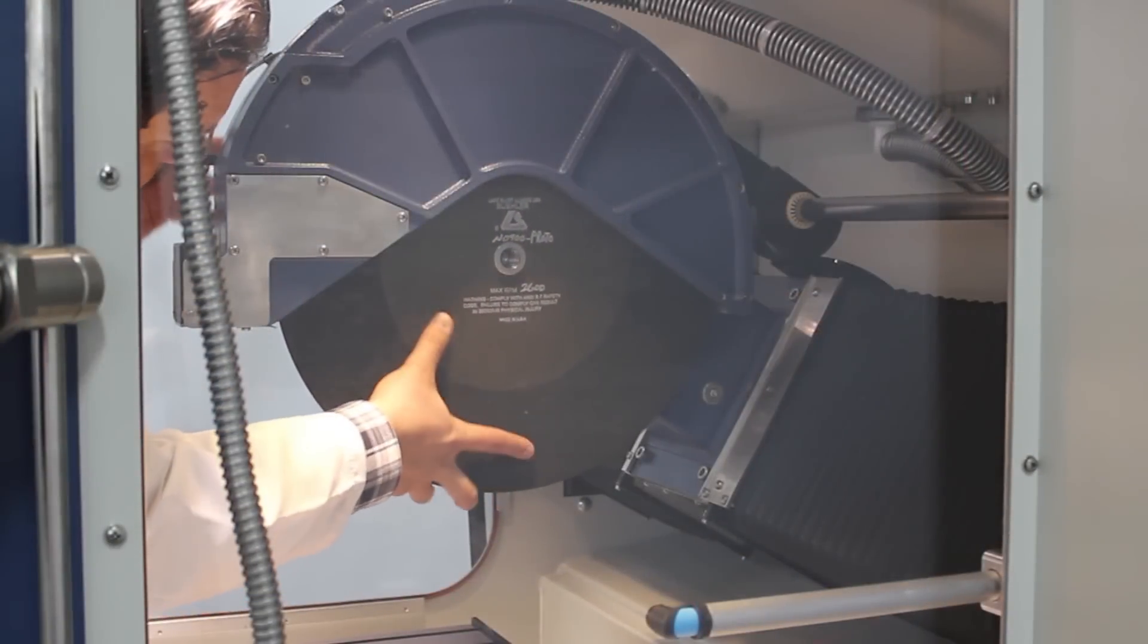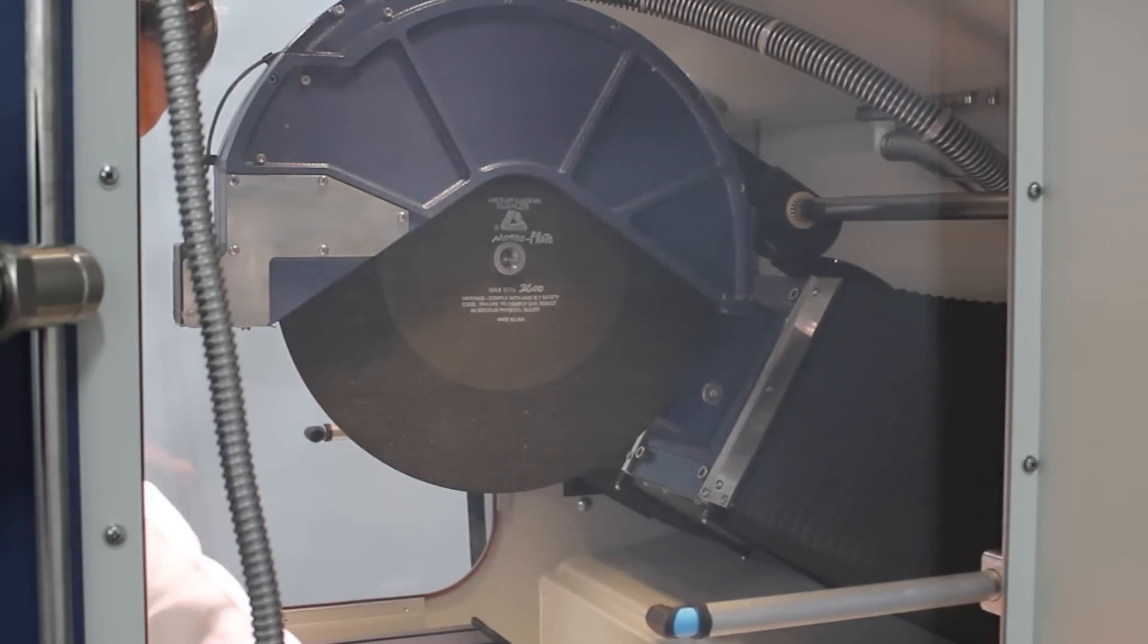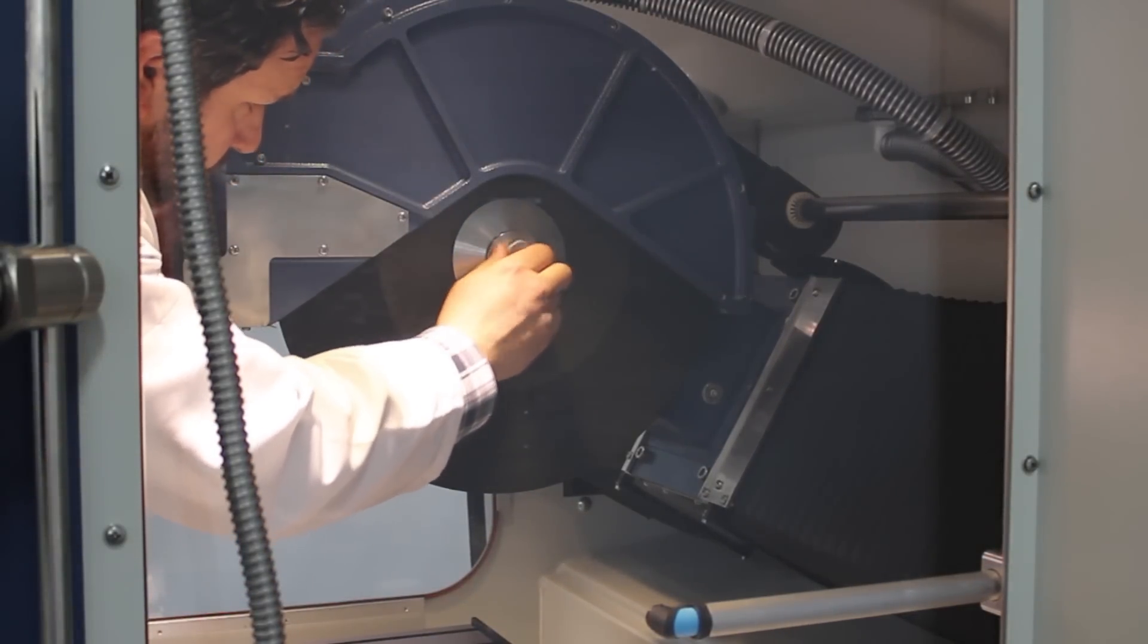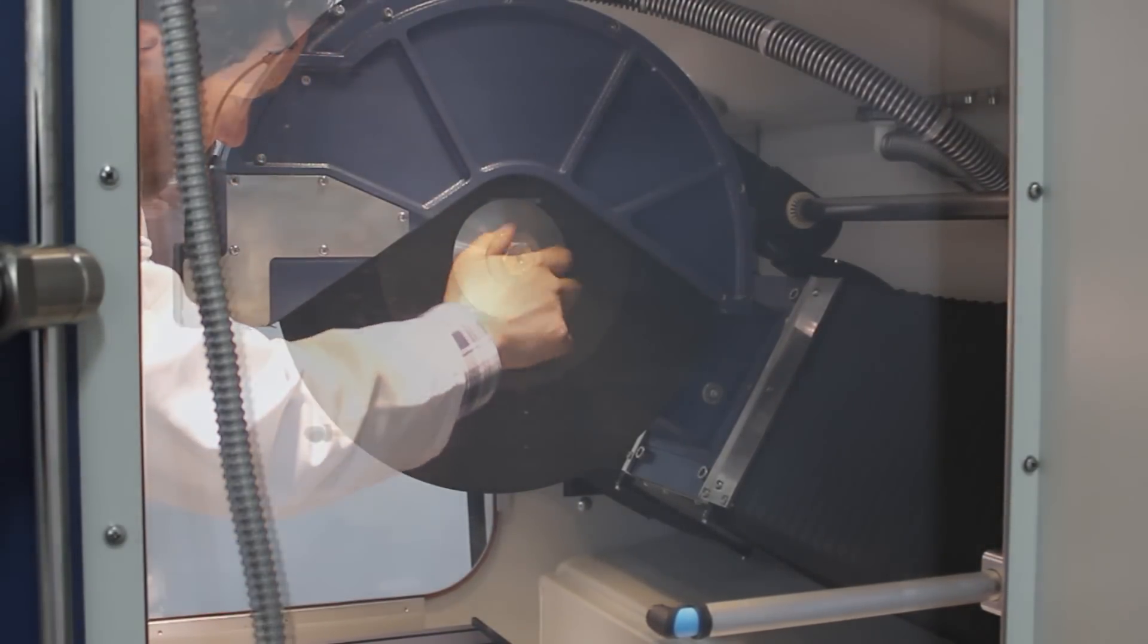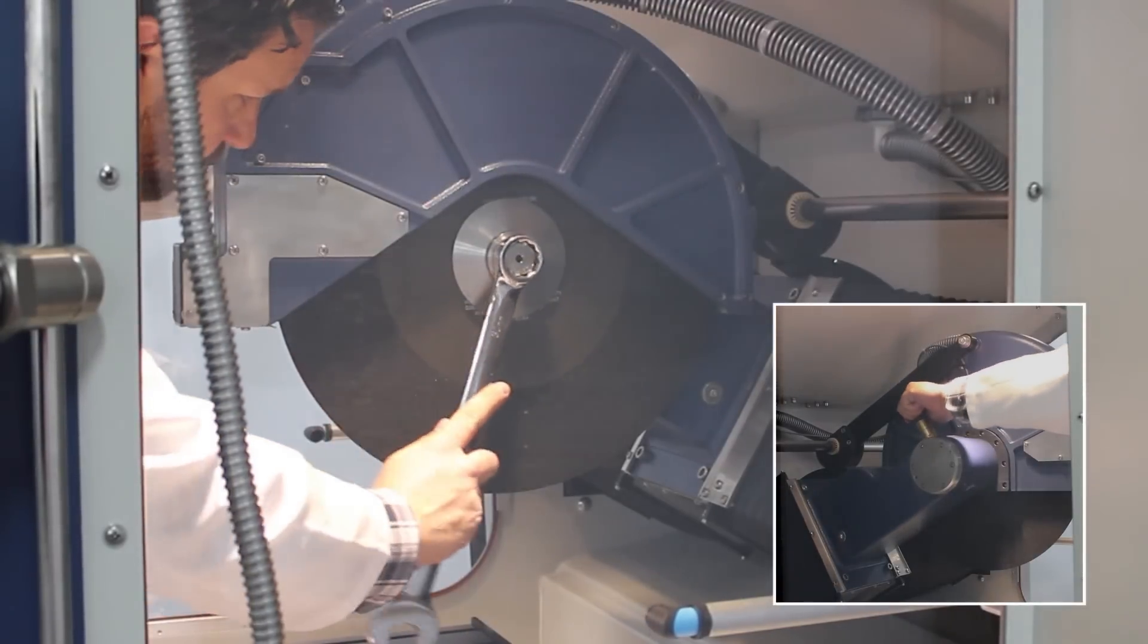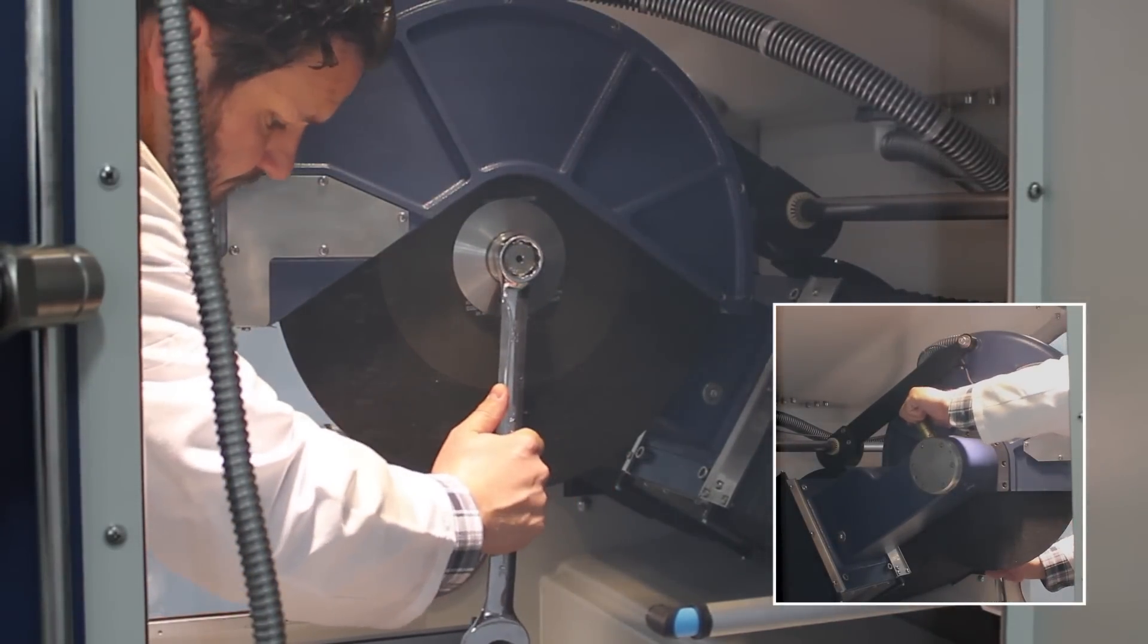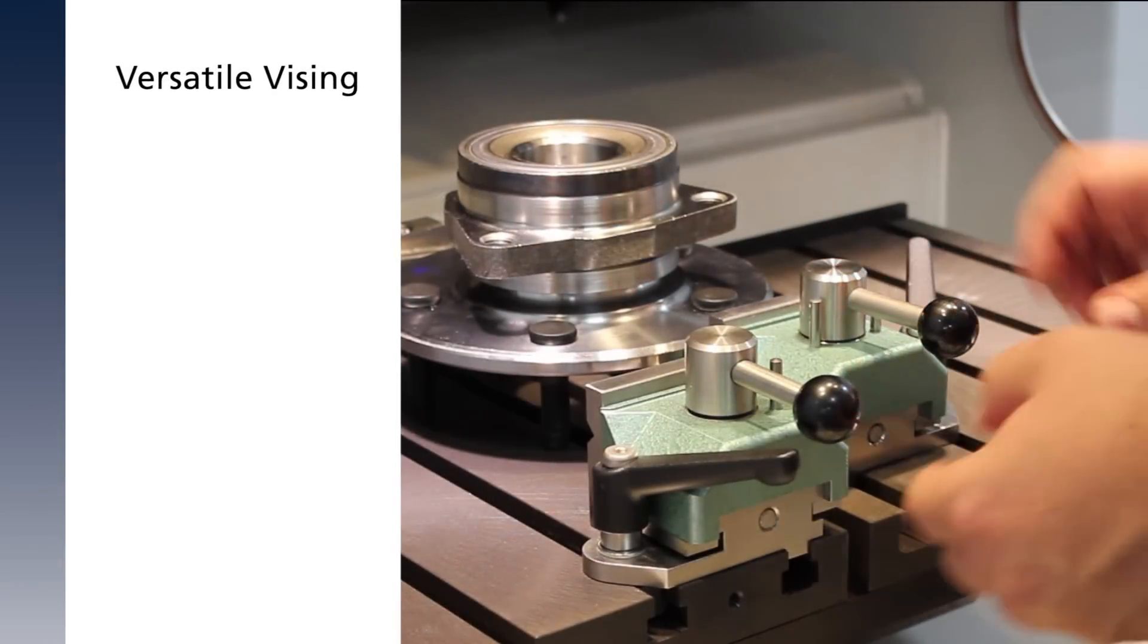Wheel installation is easy: place the wheel on the shaft, install flange and bolt. Engage the spindle lock with your left hand and tighten the bolt with the included wrench.